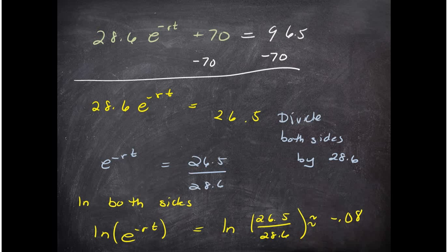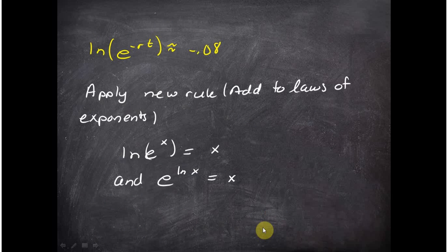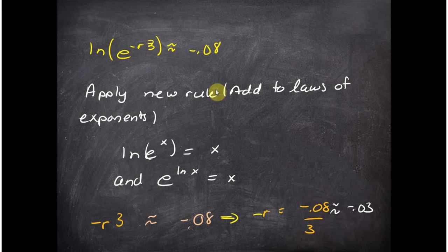So I did the natural log of this side and I get minus 0.08. And now I'm going to get rid of this exponential by killing it out with a natural log. This is the rule—it's a new rule and I want you to add it to your laws of exponents. So now you're going to have seven laws of exponents, and that's that natural log of e to the x is x, and e to the natural log of x is also x.